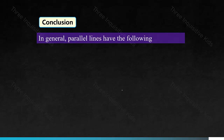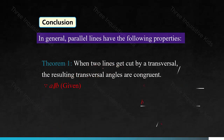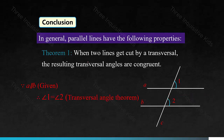So in general, parallel lines have the following properties. Theorem 1: when two parallel lines get cut by a transversal, the resulting transversal angles are congruent. Note that the word 'parallel' is essential here. It's because we already know that A is parallel to B — that's given — therefore that's how we know that angle 1 equals angle 2. We're kind of using the transversal angle axiom, but in reverse, so now it's not an axiom anymore, it's a theorem.